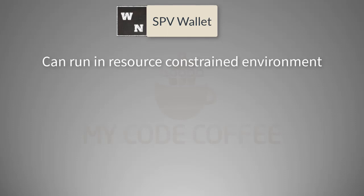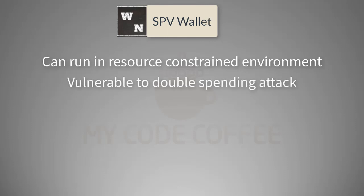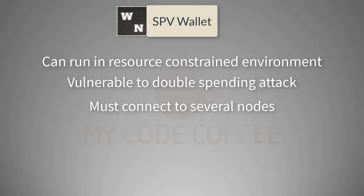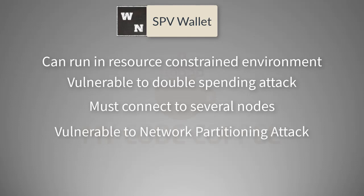But if you think about some of the disadvantages — since SPV nodes do not have the full picture of the transactions, it is vulnerable to a double spending attack. To defend itself, an SPV node must connect randomly to several other nodes so that it is in contact with at least one honest node. This need to randomly connect to several nodes can also lead to another type of attack called a network partitioning attack.